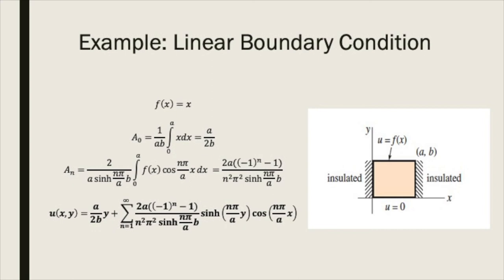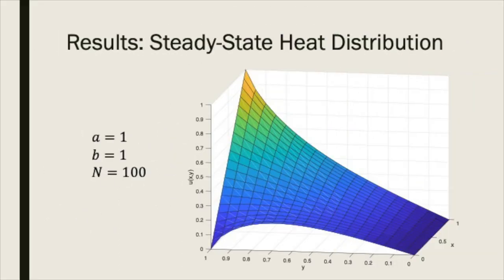The solution for the steady state temperature can then be written as an infinite series. Taking a large but finite number of terms, we will be able to plot the surface corresponding to the temperature on the rectangular domain. We take a and b equal to 1, resulting in a square domain of unit area.